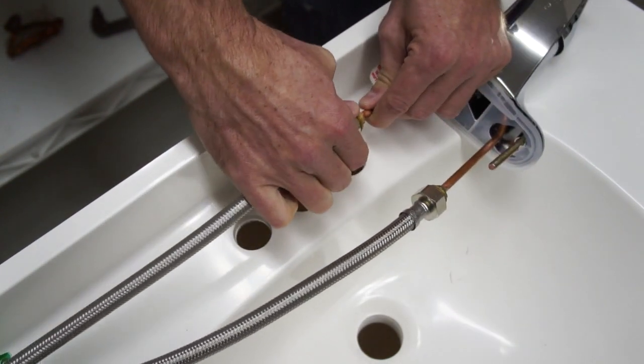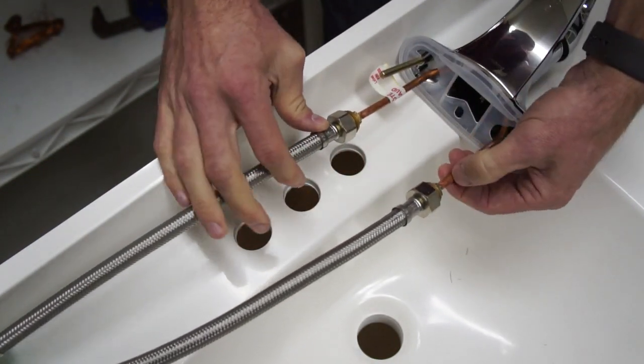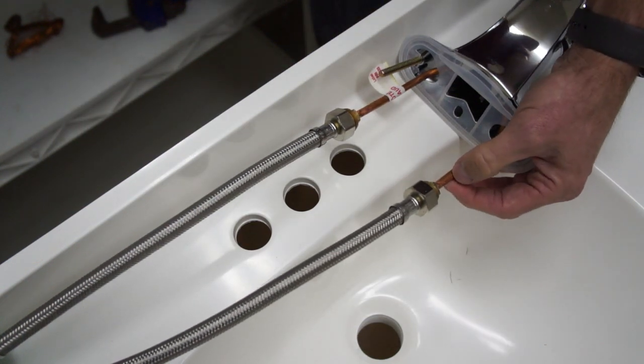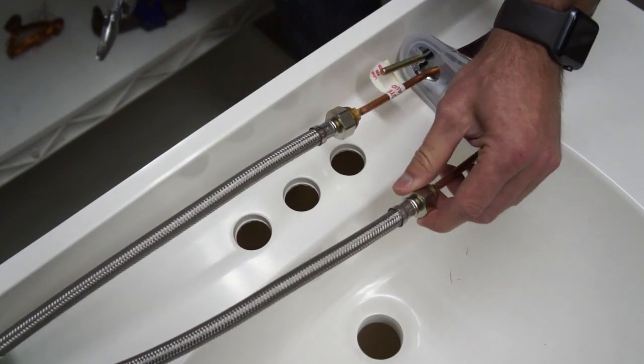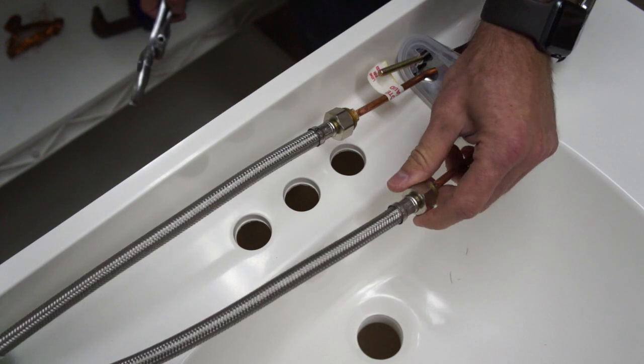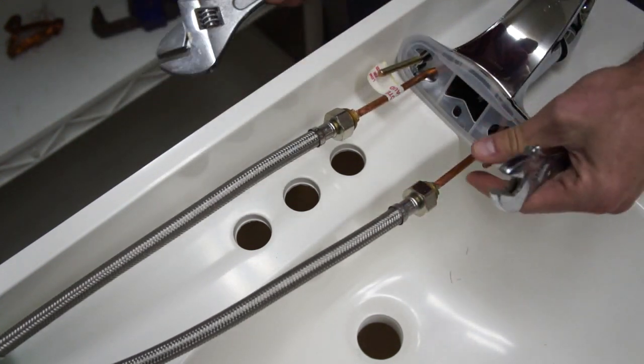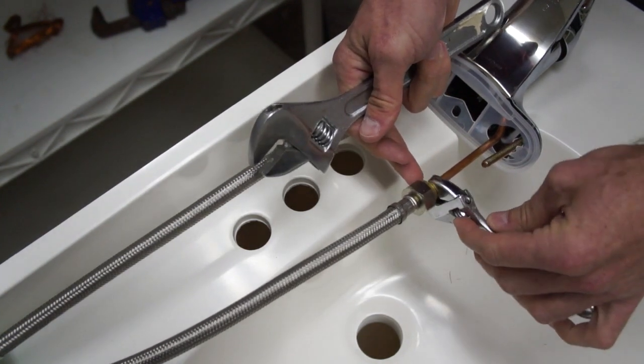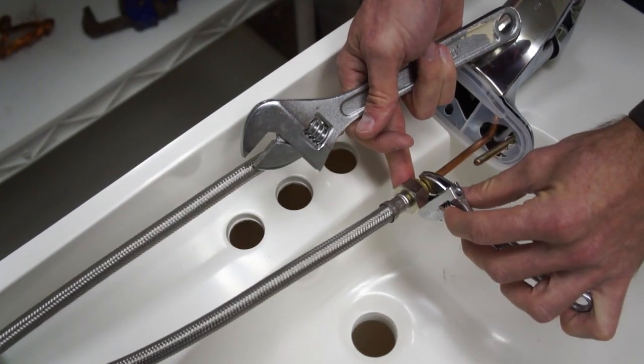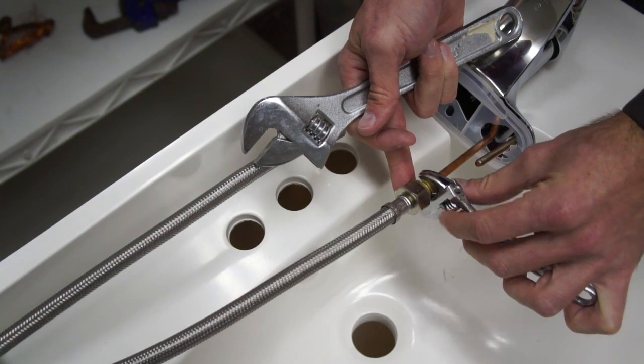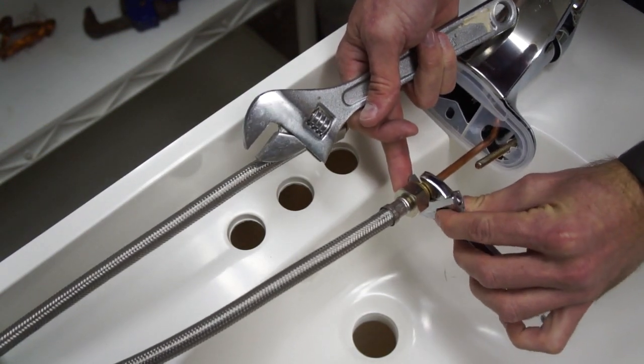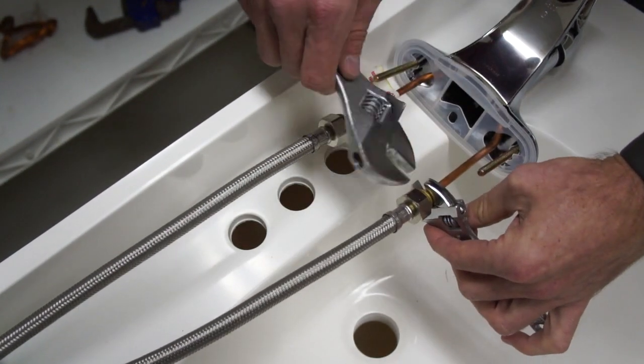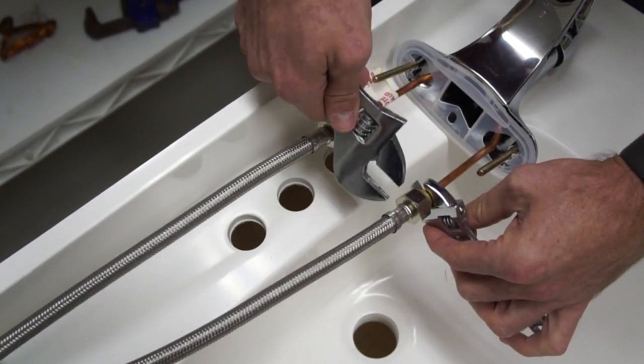You're just going to want to put them on finger tight at first because this copper line is pretty small and it can bend or crimp or break if you're trying to get these on too tight without holding onto the back of them. The connection where it goes on, there's a square back to this threaded part and you can put your wrench on there. Once you get a crescent wrench on the back side of that, then you can tighten these down better.